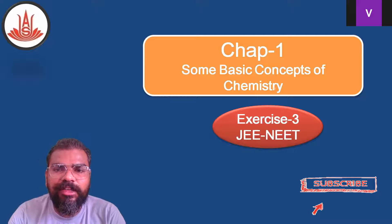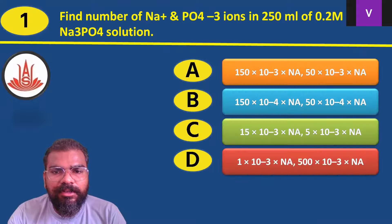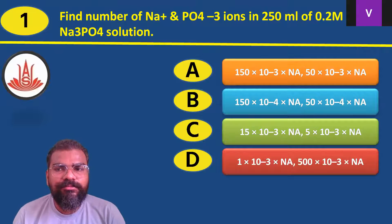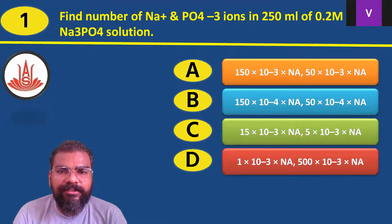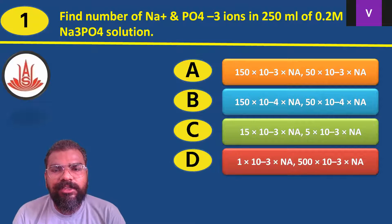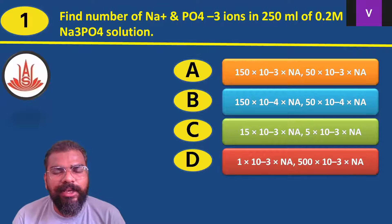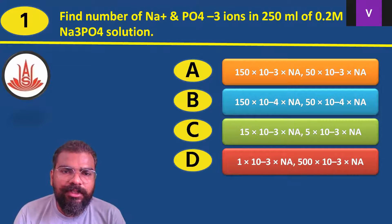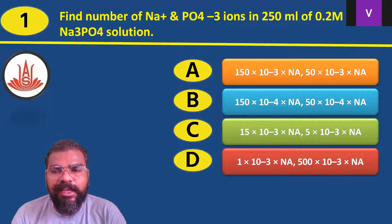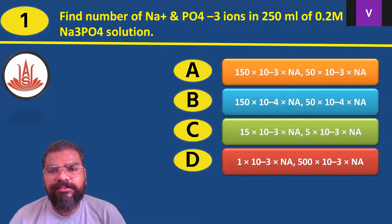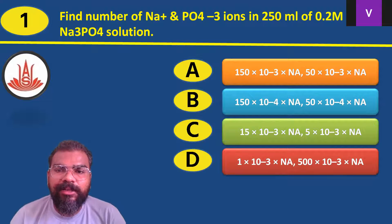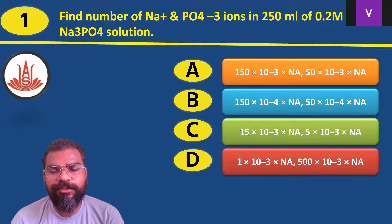Now let's get focused on today's session, Exercise 3 for Chapter Number 1. Question number 1: Find the number of Na⁺ and PO₄³⁻ ions in 250 ml of 0.2 molar Na₃PO₄ solution. There are four options mentioned.